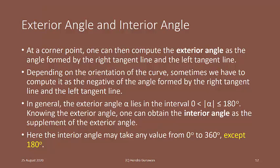In general, the exterior angle alpha lies in the interval where the absolute value of alpha is between 0 and 180 degrees, including 180 degrees. Knowing the exterior angle, one can obtain the interior angle as the supplement of the exterior angle. Here, the interior angle may take any value from 0 degree to 360 degrees, except 180 degrees.